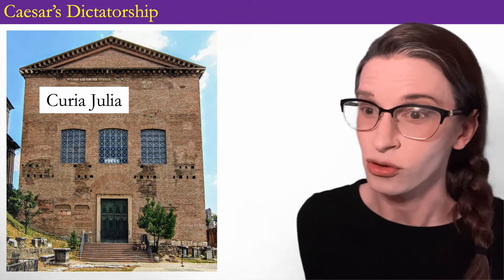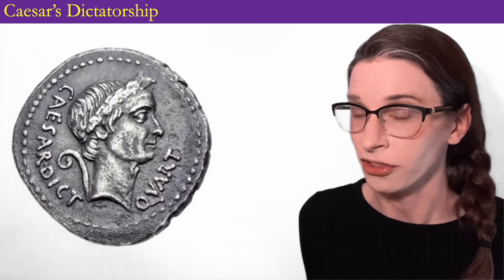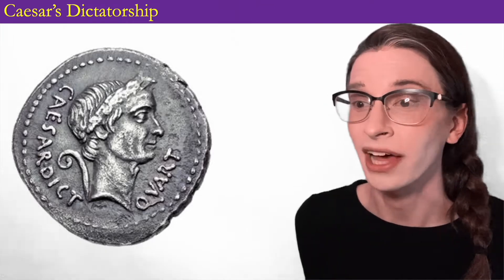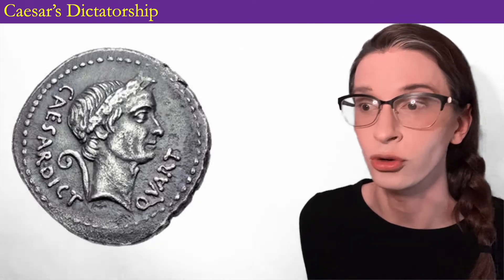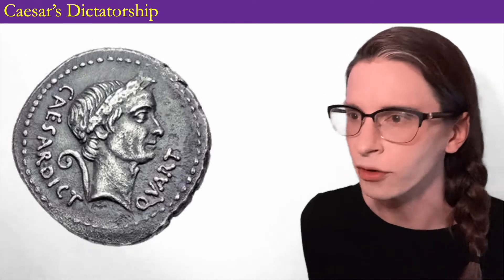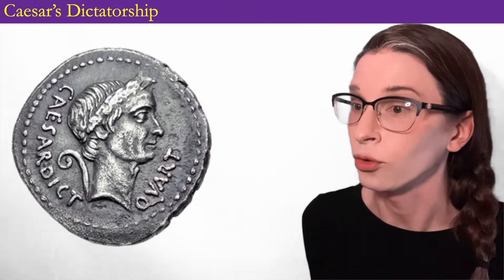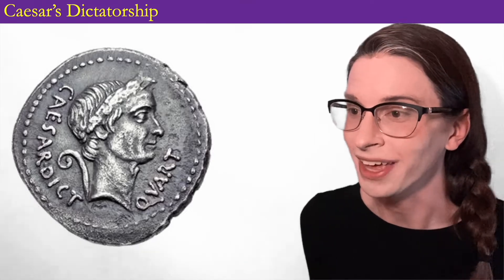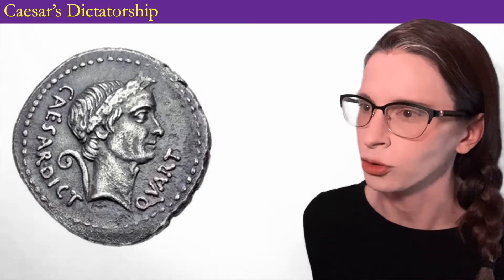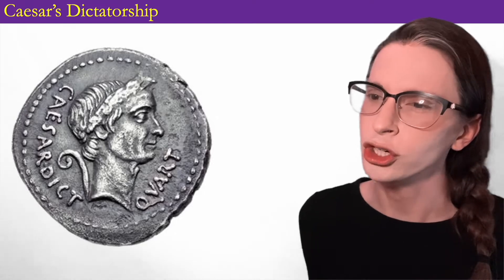Most significantly, Caesar starts to name people to offices like quaestor, praetor, and consul on his own. His position as dictator allows him to control the political process unilaterally, rather than worrying about elections or the Senate. He puts his own face on coins, which has never been done before in Rome — the coin being shown here is the first time a living mortal was ever put on a Roman coin. This is the norm in the East, which is where Caesar is getting a lot of his ideas about how to rule. In another Eastern practice, Caesar sets up a college of priests to worship him as a god.